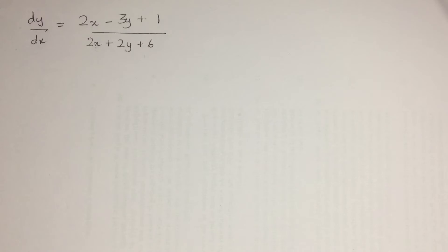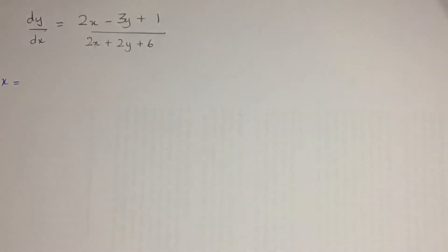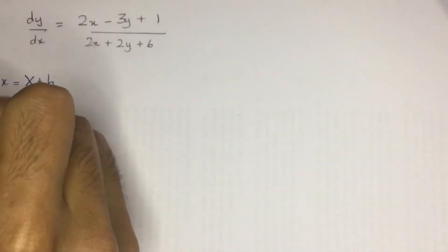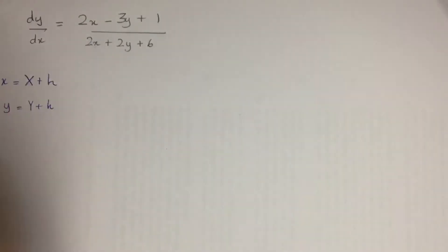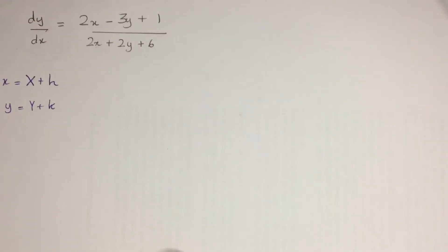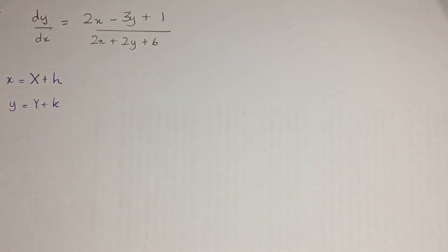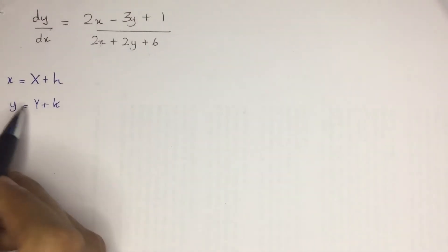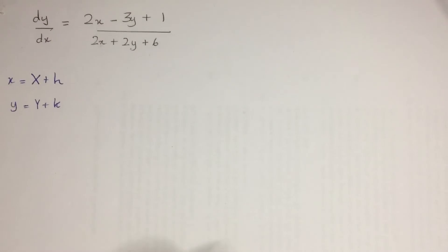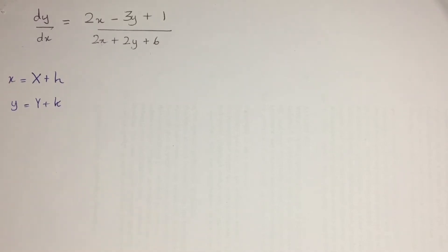Let's start. The substitution we are going to use is: x equals capital X plus h, and y equals capital Y plus k. So simple x becomes another variable plus a constant h, and likewise y becomes capital Y plus another constant k. These are the two substitutions. We are going to substitute these and convert the equation to a homogeneous type question.